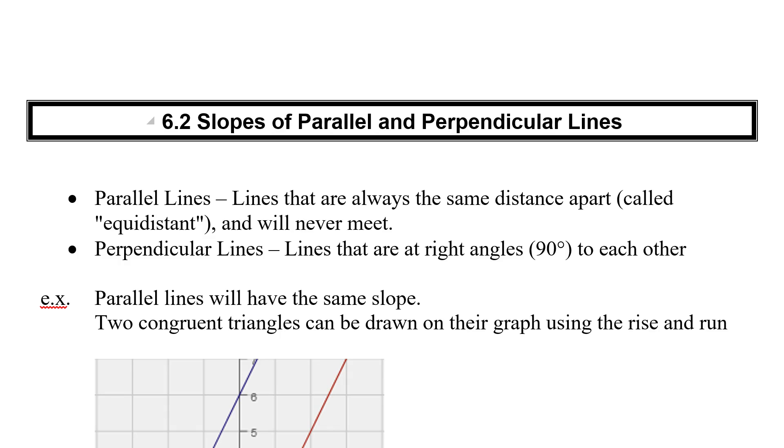Parallel lines are lines that are always the same distance apart. So if you look on a graph, they're ones that never get closer together or never get further apart. They're sometimes called equidistant. And if you continue these lines forever and ever, they will never ever meet.